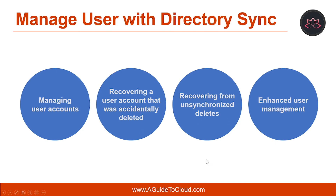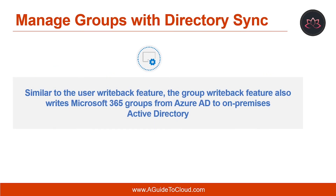Device writeback is used to enable conditional access based on either devices to ADFS-protected applications or on relying third-party trust. This provides additional security and assurance that access to applications is granted only to trusted devices. Once you implement directory synchronization using Azure AD Connect, you need to manage all group membership in your Active Directory. Like user synchronization, groups in Active Directory also synchronize from on-premises Active Directory to Azure AD. The group writeback feature also writes Microsoft 365 groups from Azure AD back to your on-premises Active Directory, and is included as an optional feature in Azure AD Connect.